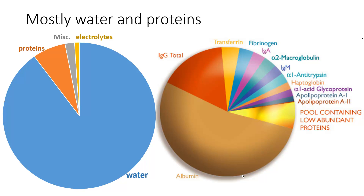Electrolytes are going to constitute somewhere around 1% or often a little less than 1% of our total plasma content. Now the proteins — that orange bar — is kind of expanded in the pie graph on the right. So everything that you see in the pie graph on the right fits inside the orange part of the pie graph on the left. And you can see that there are quite a few different proteins present in various abundance in the plasma.